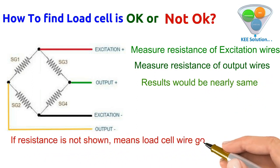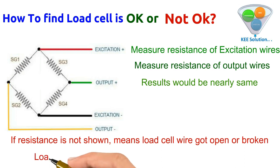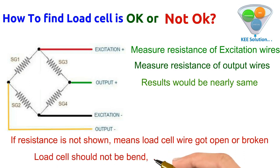If the resistance is not showing a reading, the load cell wire may be open or broken. A load cell should not be bent, twisted, or damaged. If a load cell has scratches, bends, or twists, it will affect its performance.